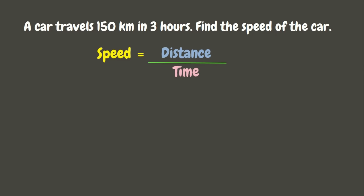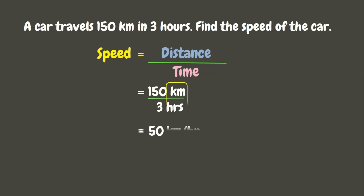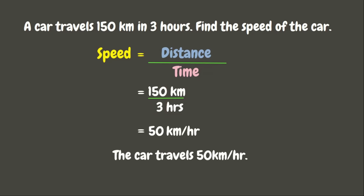Here in our problem, the distance is 150 kilometers, while the time is 3 hours. Now, let us solve: 150 divided by 3. The unit of measurement would be kilometer per hour. Therefore, the car travels 50 kilometers per hour.